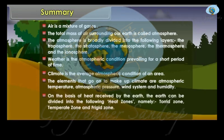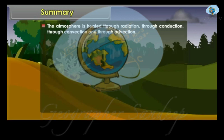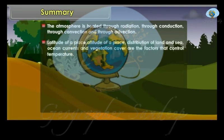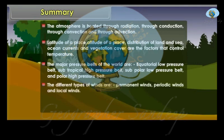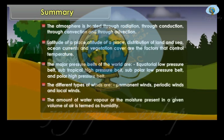On the basis of heat received by the earth, the earth can be divided into the torrid zone, temperate zone, and frigid zone. The atmosphere is heated through radiation, conduction, convection, and advection. Latitude of a place, altitude of a place, distribution of land and sea, ocean currents, and vegetation cover are the factors that control temperature. The major pressure belts of the world are the equatorial low pressure belt, subtropical high pressure belt, subpolar low pressure belt, and polar high pressure belt. The different types of winds are permanent winds, periodic winds, and local winds. The amount of water vapour or moisture present in a given volume of air is termed as humidity.